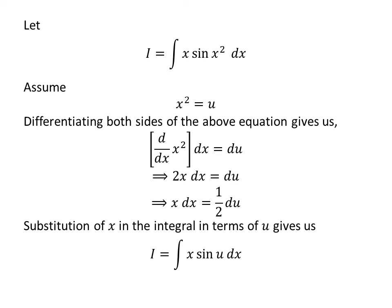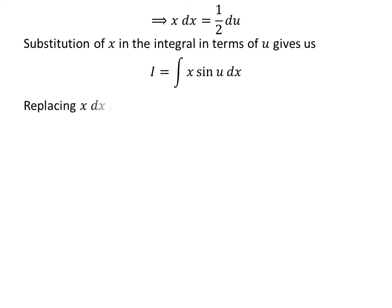Substitution of x squared by our assumed value in the integral I gives us I is equal to integral of x times sine of u. Now let us replace x differential of x by half times differential of u which we had found out earlier. So I is equal to integral of half of sine of u with respect to u.